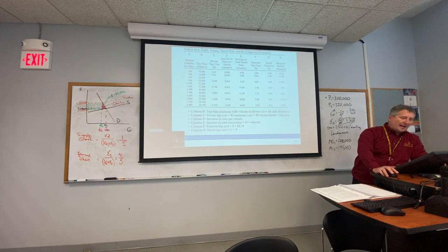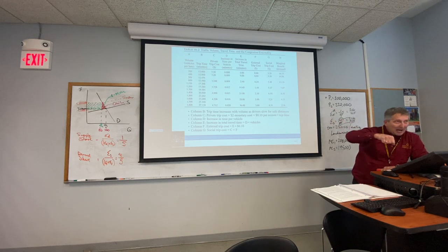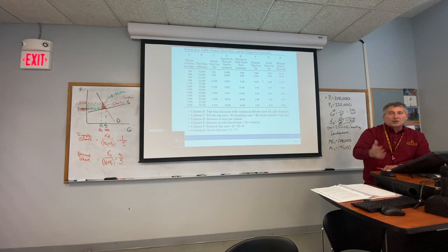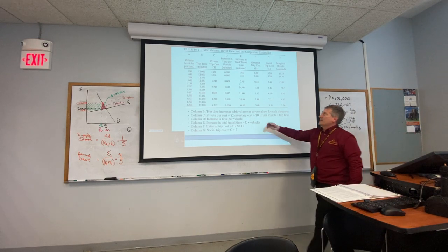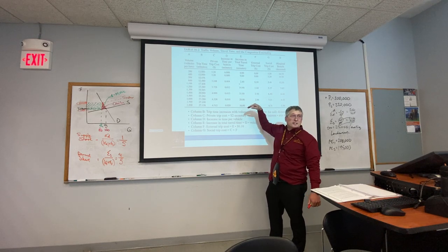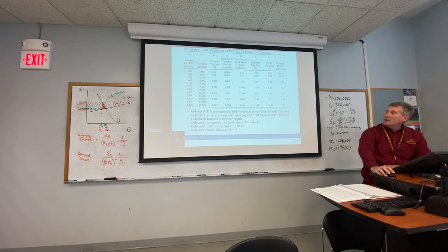Here's a detailed table. Column A is the volume of vehicles per lane. At 200 vehicles, the externality is zero — even at 400 it's zero. Traffic moves at a normal pace and the highway can absorb that volume. Starting around 600, we begin to see an effect, and once we hit stop-and-go territory, the added time per vehicle is 14 minutes, then 21 minutes, then 36 minutes. We can put dollar values on that wasted time. Column B is trip time, then private trip cost — $2 monetary cost plus 10 cents per minute times trip time — then external trip cost and social trip cost.